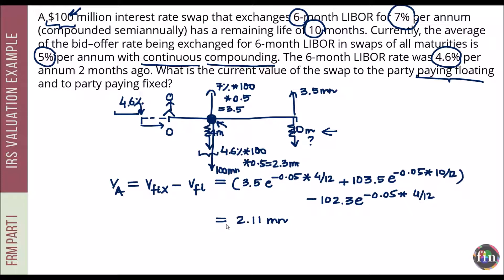Computing these calculations gives the value of the swap to party A as 2.11 million. The value to party B, who pays fixed, would be minus 2.11 million. This completes the valuation using the bond method.